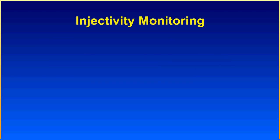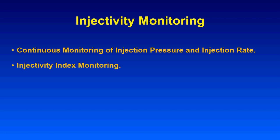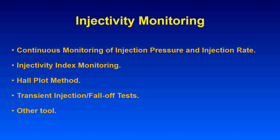As agreed in the last tutorial, this series covers: first, injectivity monitoring — containing continuous monitoring of injection pressure, production, and other parameters in the full field for both oil producers and injectors; second, injectivity index monitoring, already discussed in the last tutorial; Hall plot, mentioned in the first tutorial; transient injection or fall-off tests, which will have a separate tutorial next week; and other tools. Let's focus on the first item today: how to monitor a water injection project.